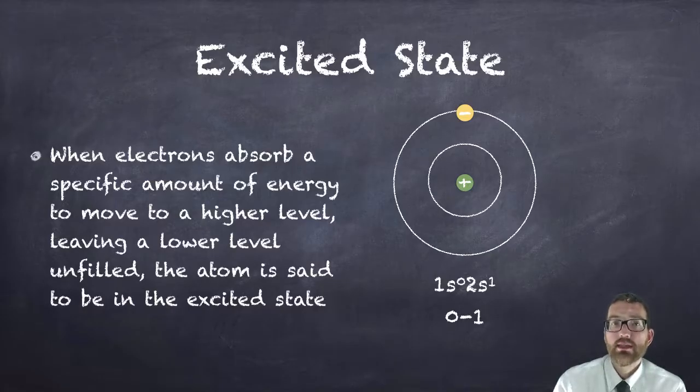That's how you would recognize this as an excited state. It's very easy to determine excited from ground state because the electrons aren't where they're supposed to be. It's the same number of electrons but they're just not where they're supposed to be.